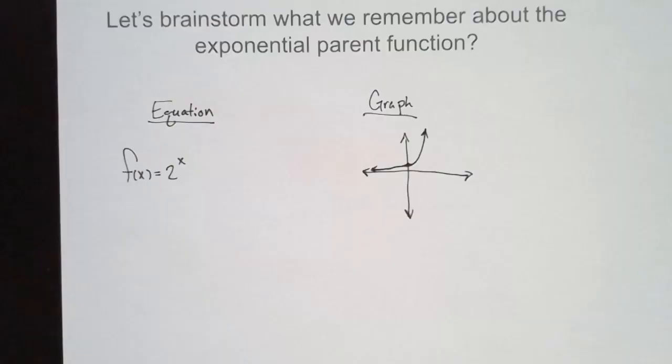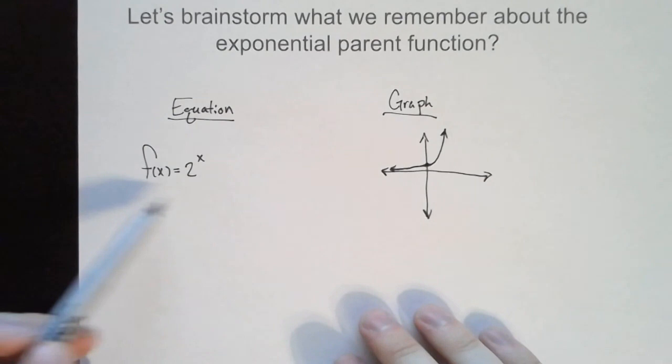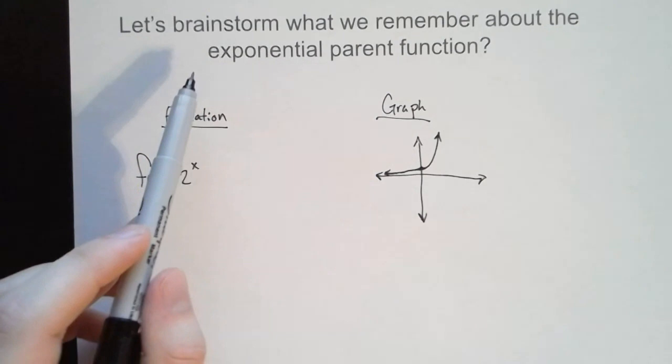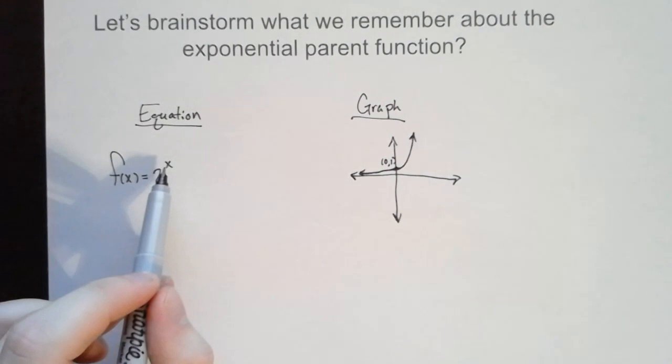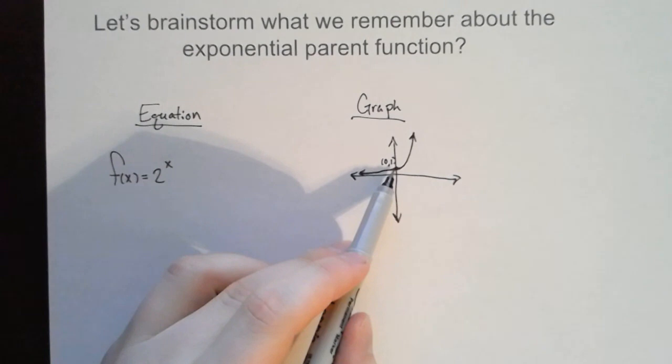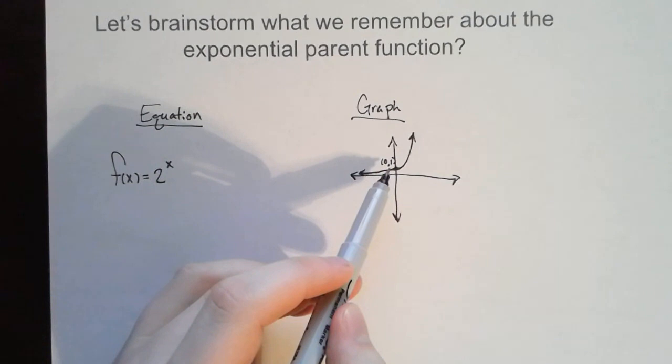All right, hopefully we were able to come up with something like either of these two things for the equation. We have a function equal to 2 raised to the x power, where x is in the exponent — that's why it's called an exponential function. For the graph, the key point is the y-intercept at (0, 1). Anything raised to the zero power gives an output of one. As we plug in larger values into the exponent it grows faster and faster, and as we plug in more negative values it approaches zero, giving smaller and smaller fractions. Hopefully that refreshes your memory on exponents.